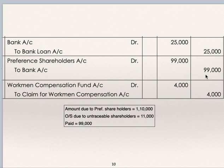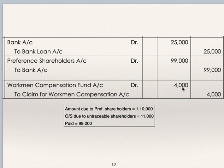Preference shareholders to bank Rs. 99,000. Amount due to preference shareholders is Rs. 1,10,000. But the shareholder having 100 shares is untraceable, so amount payable to him is 100 multiplied by Rs. 110, which is Rs. 11,000. Therefore credit to bank is Rs. 99,000; the company could pay only Rs. 99,000. Workman's compensation fund debit to claim for workman's compensation account. That is the reason why from the total Rs. 10,000 workman's compensation fund, only Rs. 6,000 could be utilized for transfer to CRR.